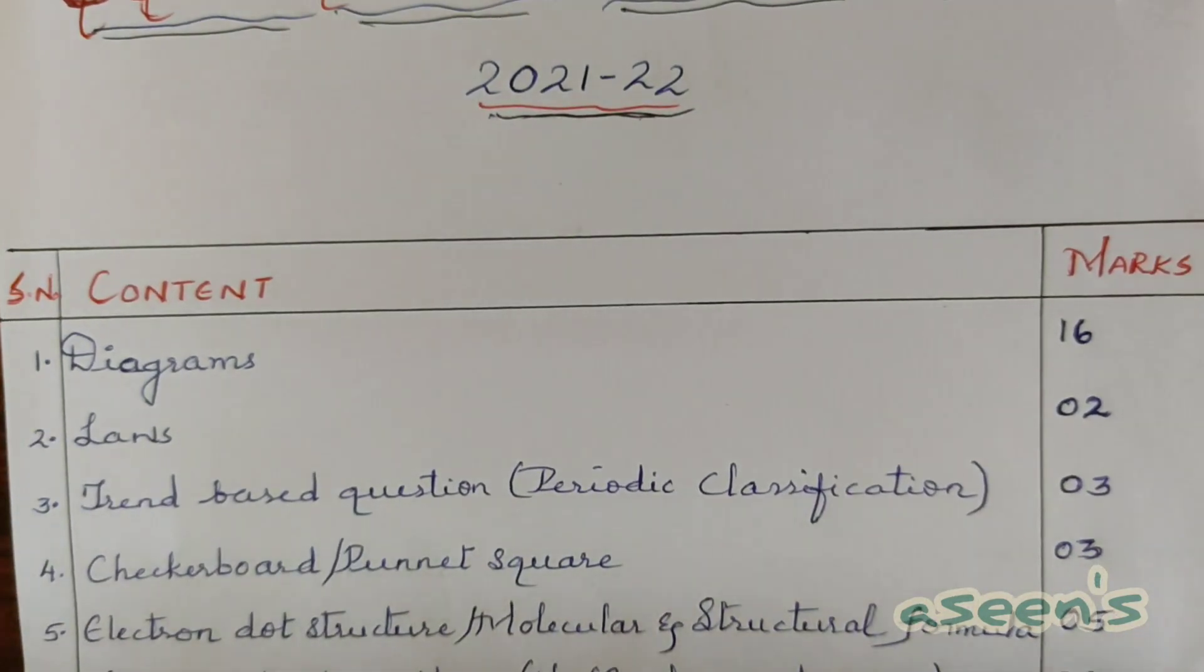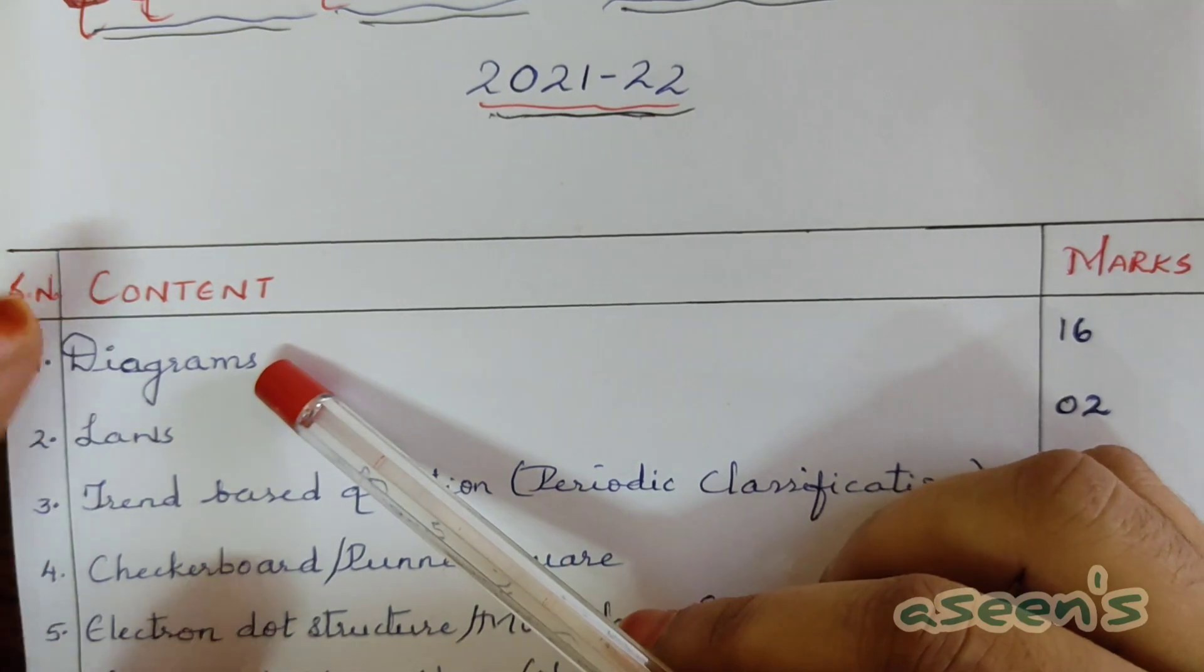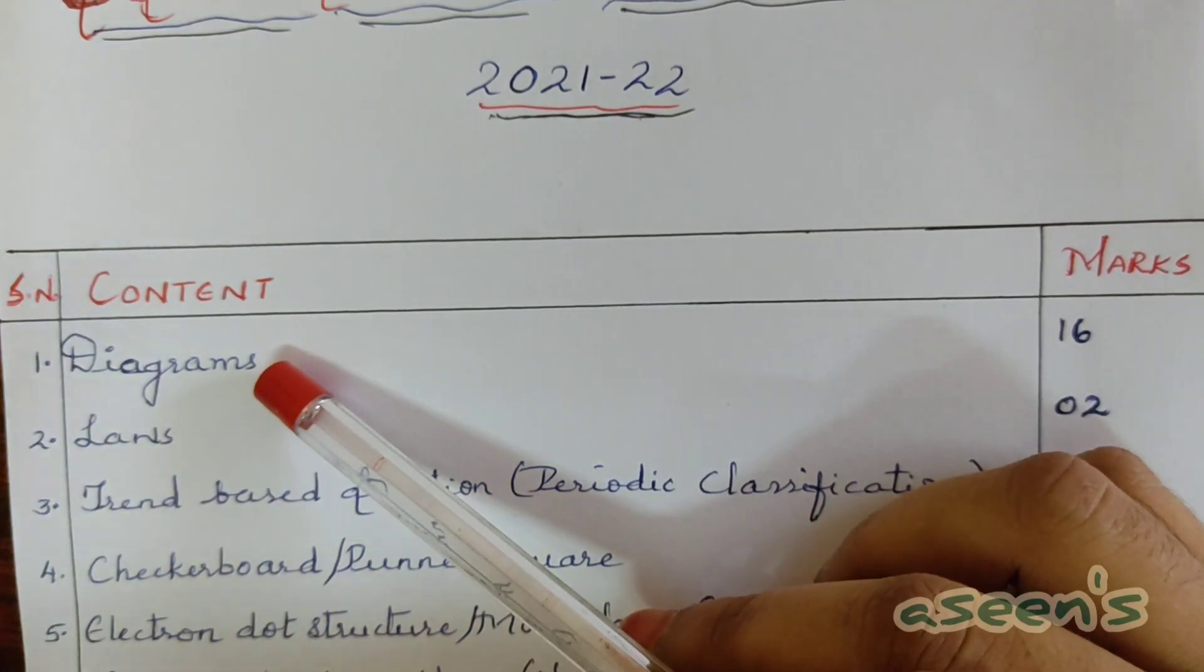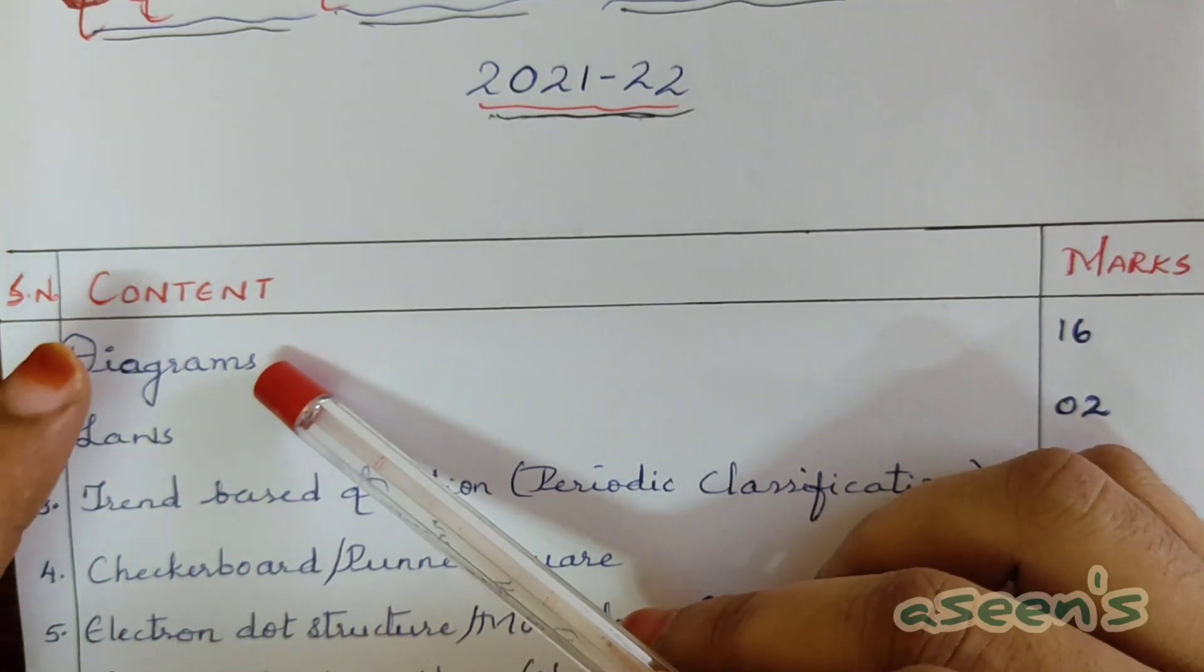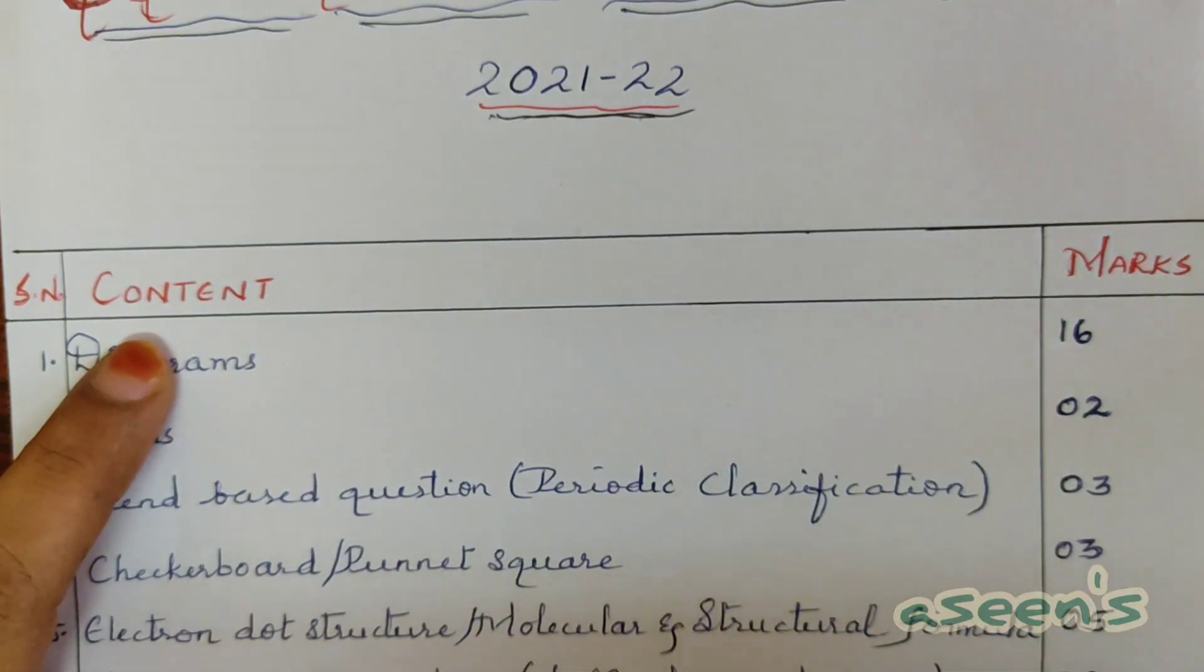Very first in the list is definitely going to be diagrams, the very important part of science. For this year, diagrams are going to be for 16 marks, divided into 5 plus 5 plus 6. This year's paper is going to be divided into physics, chemistry, and biology.